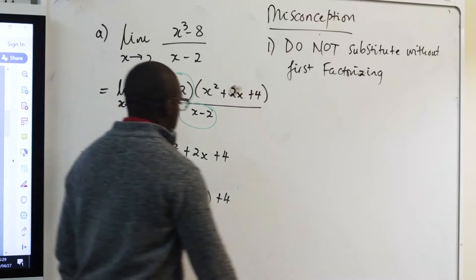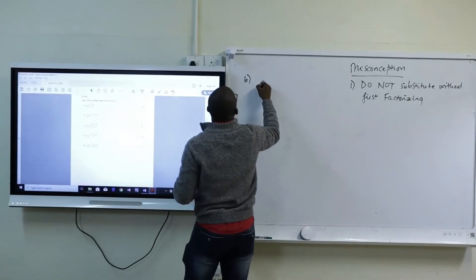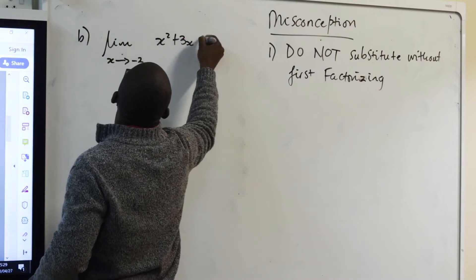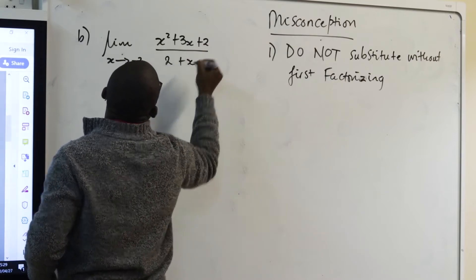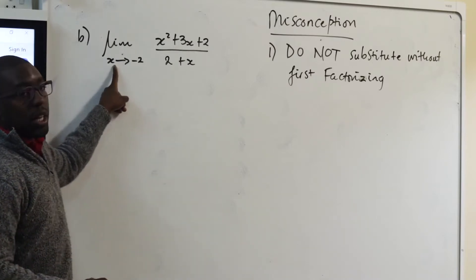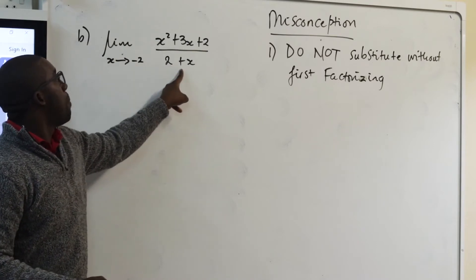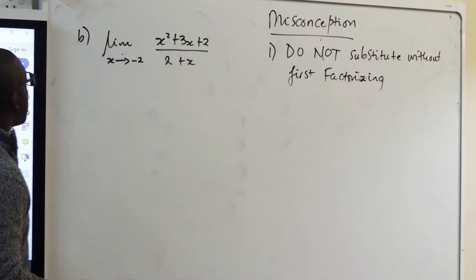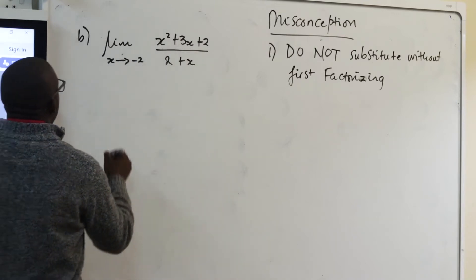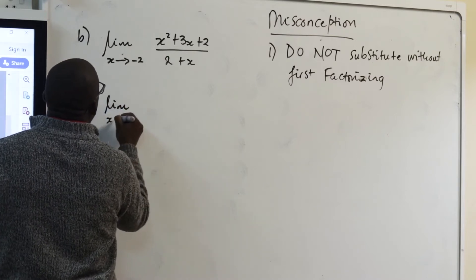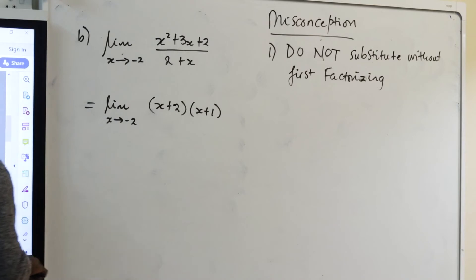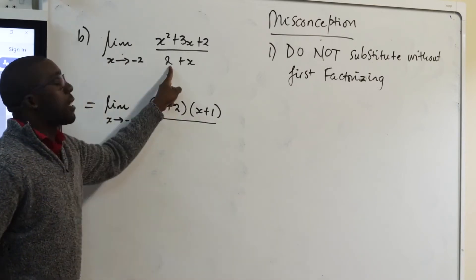Part B: the limit as x approaches negative 2 of x squared plus 3x plus 2 all over 2 plus x. Remember the misconception — do not substitute without first factorizing. If you had attempted to substitute straight away, you would get 2 minus 2, which gives zero in the denominator. So always start by looking for something to factorize.